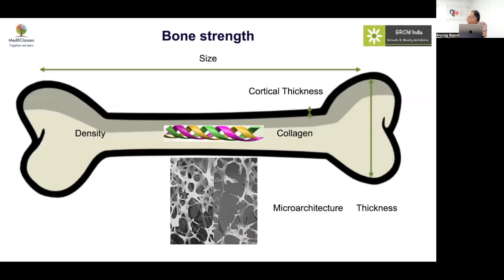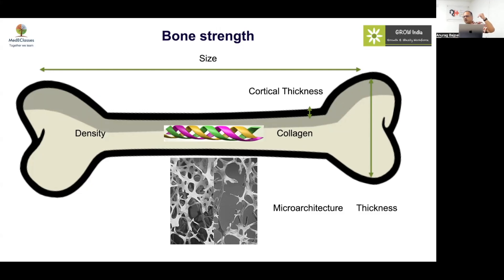When you talk about bone strength, it's not just density — not just quantity, but also quality. Factors that determine quality include size (longer bones are better), density, thickness of the cortex, thickness of the bone overall, and internal geometry. When you're looking at DEXA, you're only looking at density and not any of these other things, which is a significant drawback.